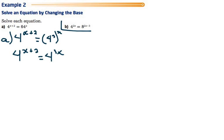And it's at this point when we have the same base on both sides of the equation, we can actually cancel the bases, and we can say that the exponents are equal to each other, so that x plus 2 equals 3x.